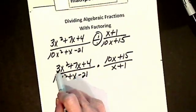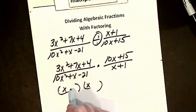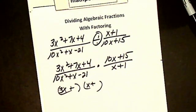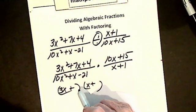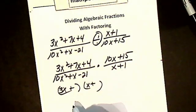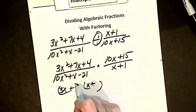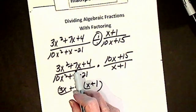So I'm going to get 3x squared plus 7x plus 4 divided by 10x squared plus x minus 21 times 10x plus 15 over x plus 1. That's my first step. Now, I factor. Here's my trinomial coefficient in front. It's trial and error. So I'm going to have x, x, plus, plus. My only choice is 3 and 1. It's either 2 and 2 or 4 and 1. I have no idea. I'm going to try 2 and 2 first.